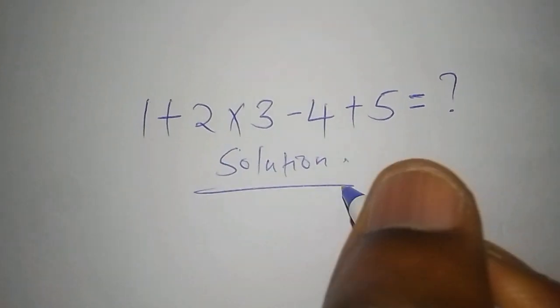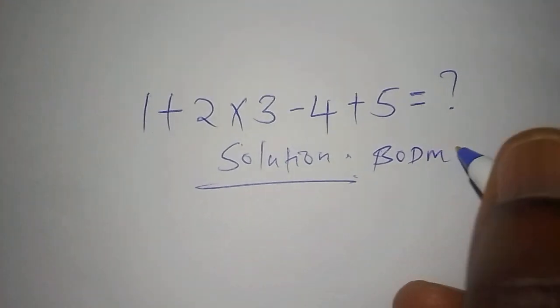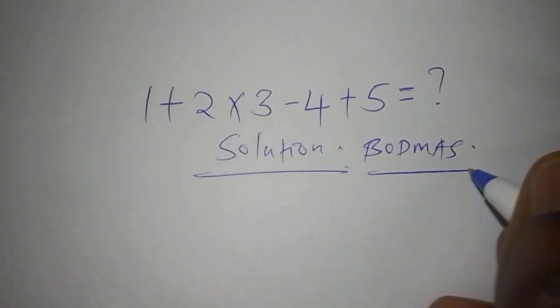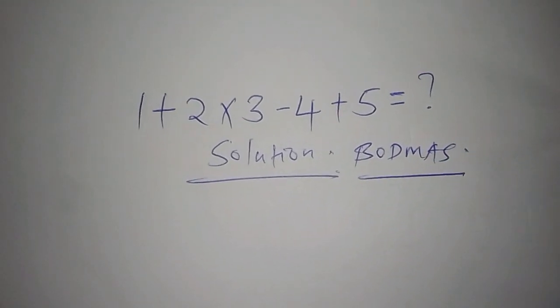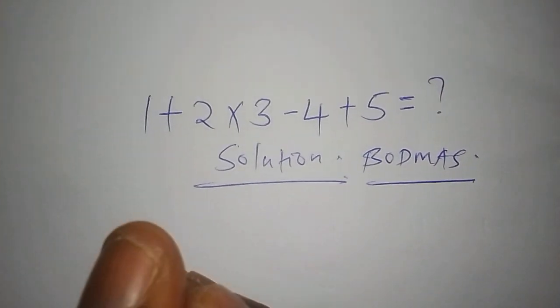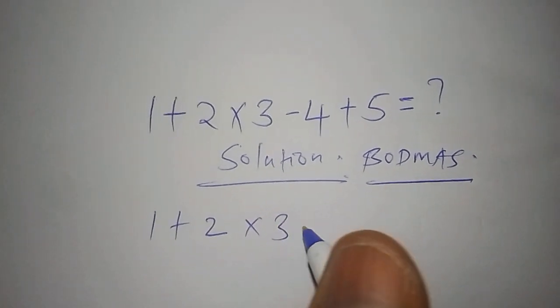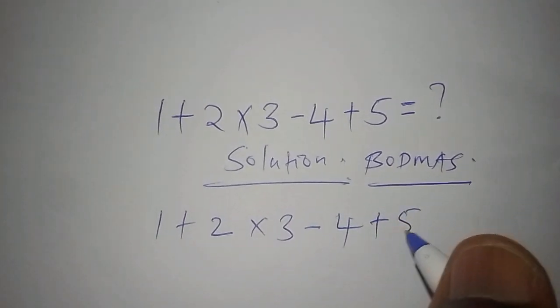Watch up to the end. For us to work it out, we have to introduce something called BODMAS. When you introduce BODMAS, we're going to write it down. We have 1 + 2 × 3 - 4 + 5.